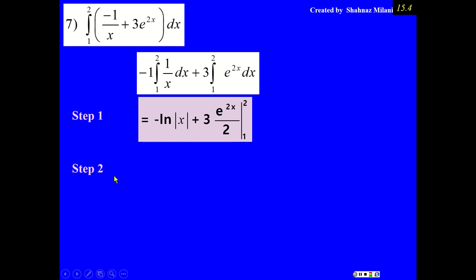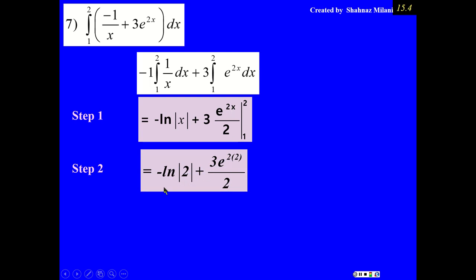Step number 2. Replace your x by the higher x value, 2. That means this x becomes 2. Natural log of 2, we are going to plug it on the calculator. And here, this 2 times this 2 is going to be 4. When I plug it on the calculator, my answer is going to be 81.2.